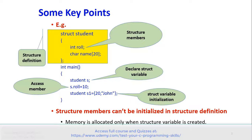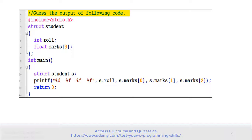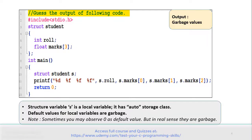Let's discuss the first example. See the code carefully and guess the output. The program has a Structure student with two members: role and marks. In the main function, Structure variable s is created, and a printf displays the values of the Structure members. The correct answer is that this program displays garbage values. The Structure variable s is a local variable with automatic storage class, and the default value for local variables is garbage. Sometimes you may observe zero, but in real sense they are garbage.